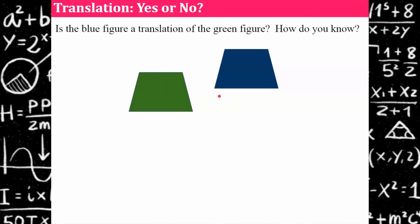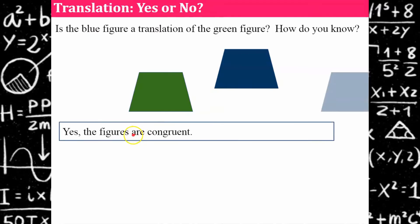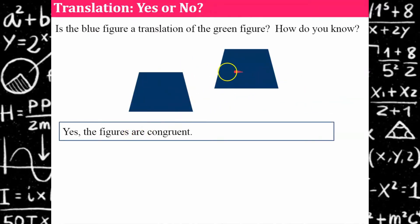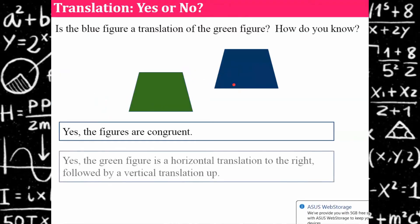Let's see how you did. The figures are congruent — you can see I can slide and put the blue on top of the green, and I can also slide and put the green on top of the blue, so they are congruent.